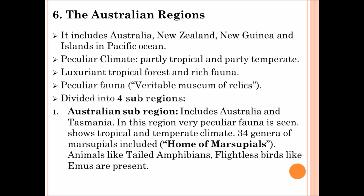The sixth region is the Australian region. It includes Australia, New Zealand, New Guinea, and islands of the Pacific Ocean. It contains a very peculiar climate — partially tropical and partially temperate. A luxuriant forest is present, and very peculiar fauna species are formed, so it is called the Veritable Museum of Lakes. The Australian region is divided into four sub-regions. The first is the Australian sub-region, which includes Australia and Tasmania. This region contains very peculiar fauna, with 34 genera of marsupial species, so it is also called the home of marsupials. Animals like flightless birds such as the emu are present.